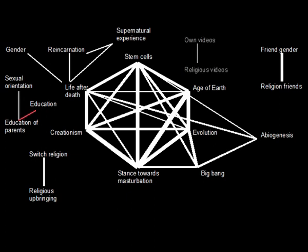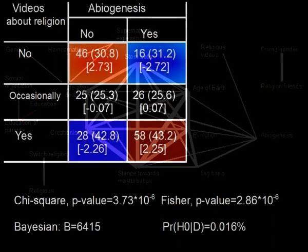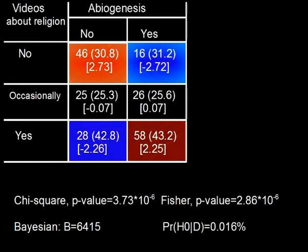A separate graph appears: those who own videos versus those with religious views in their videos — but that may again be a glitch. Abiogenesis is also connected to stance towards masturbation and to having videos with religious content, negative or positive. Taking a quick look: those that do not have videos about religion are less likely to believe in abiogenesis than people who do. The probability for there being a dependency is still high, but it's not that extreme a connection as was found for earlier dependencies.